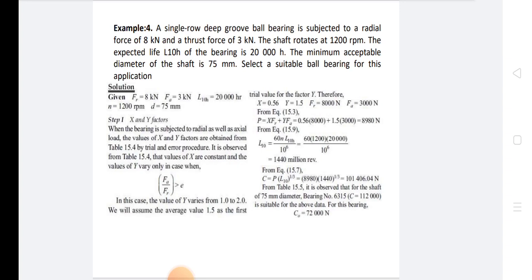Since Fa/Fr > e, we use X = 0.56 and Y = 1.5. With Fr = 8000 N and Fa = 3000 N, the equivalent dynamic load P = X·Fr + Y·Fa = 8980 N.